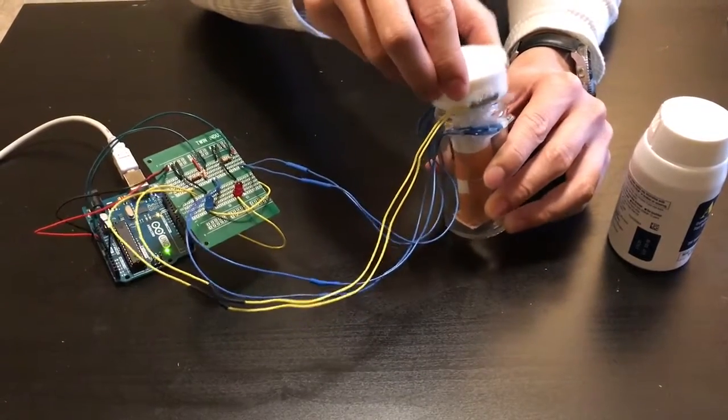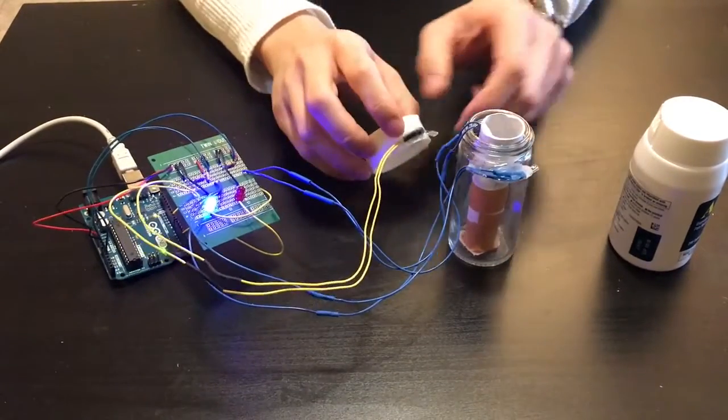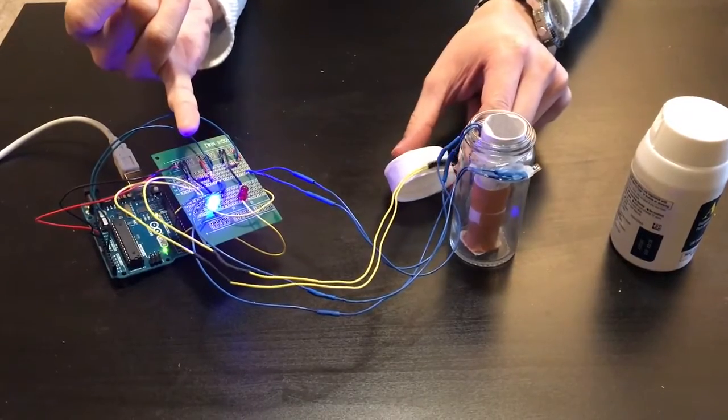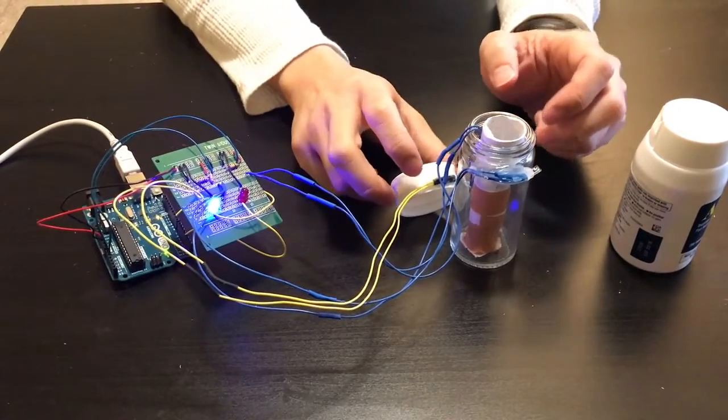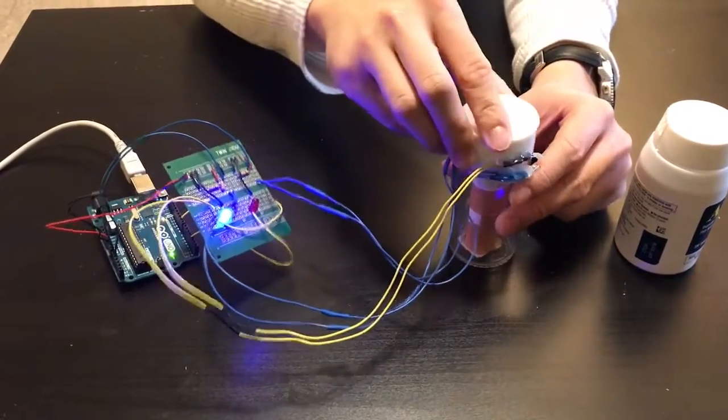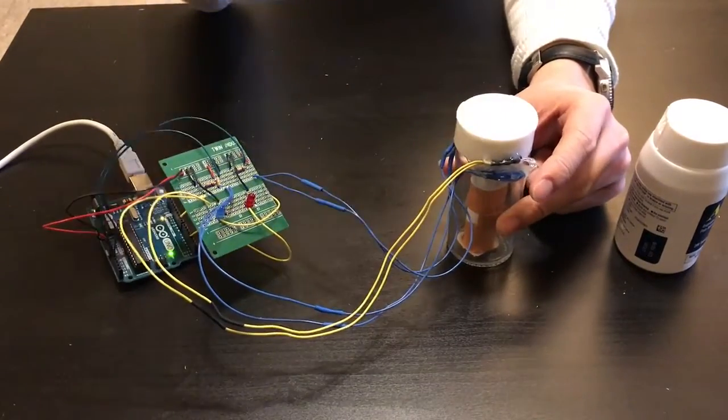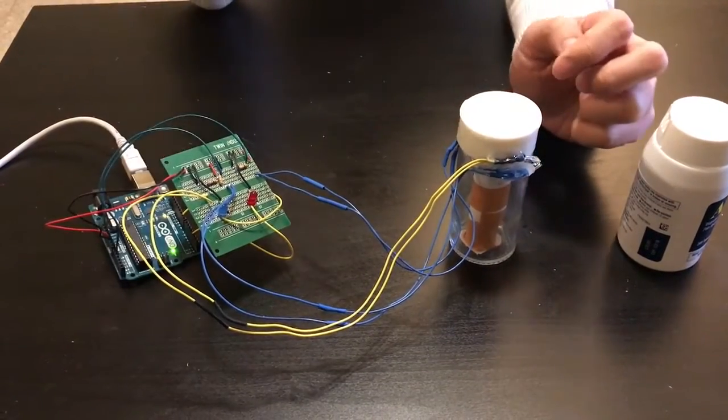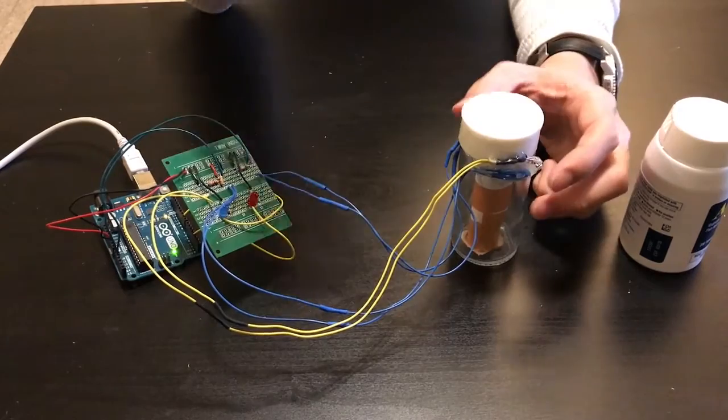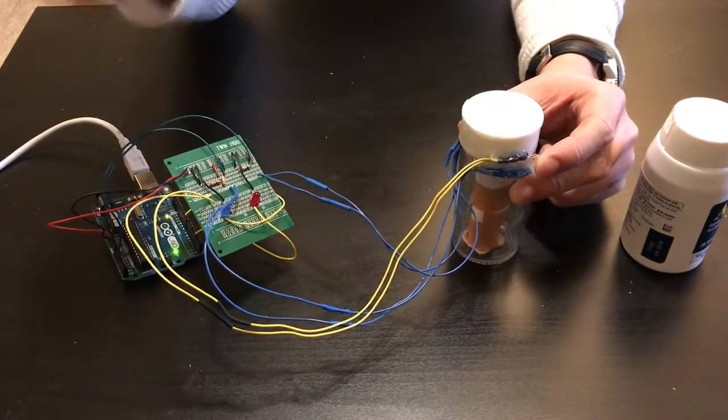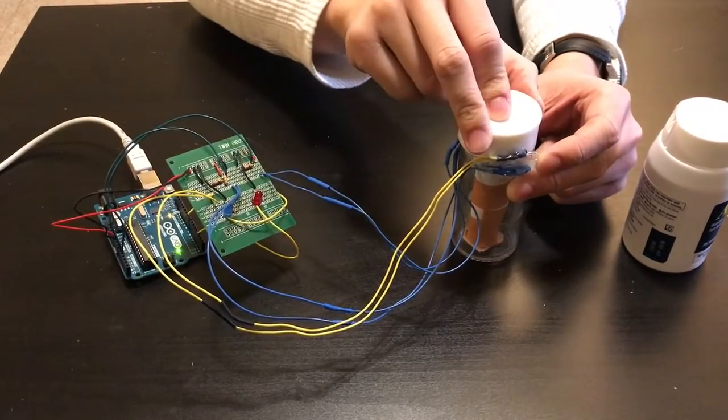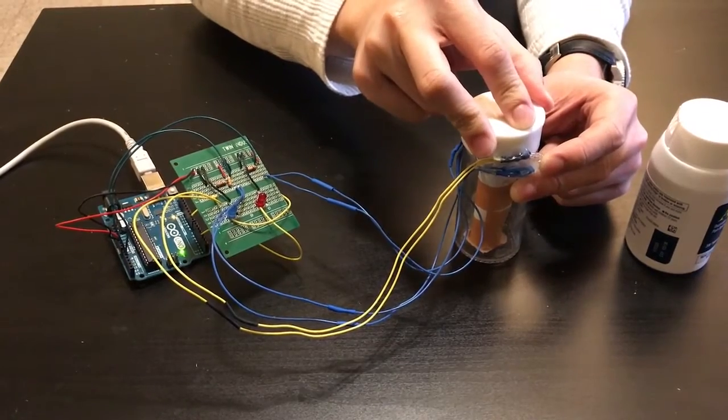As you can see when the pill bottle is opened this blue LED indicates that the pill bottle has been opened and if we close it that it will turn off. This on and off signals the opening and closing of the pill bottle. This information will be sent to our app and it would be able to detect if the patient has taken the pill.